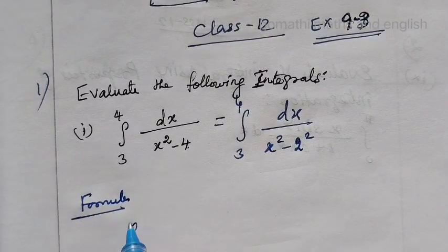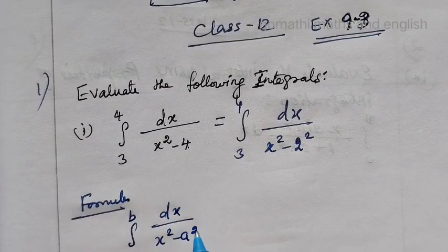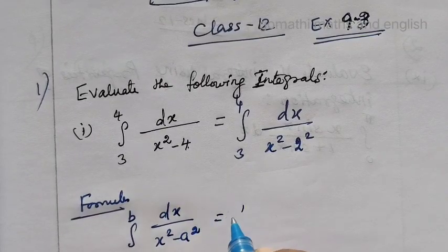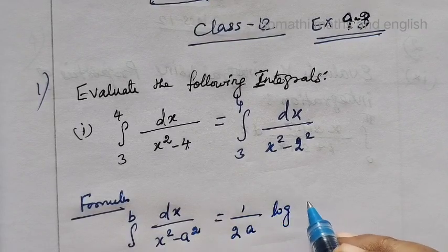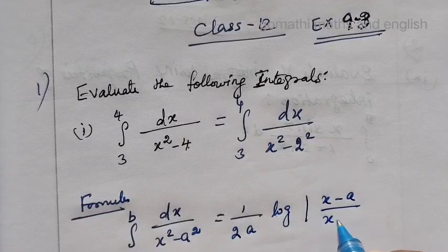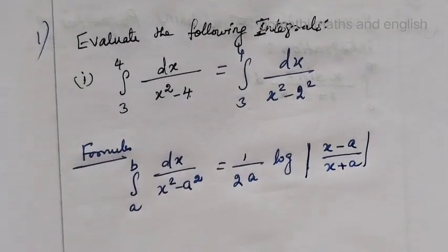Integral a to b, dx over x squared minus a squared, equals 1 over 2a, log of modulus of x minus a over x plus a. This is the formula.